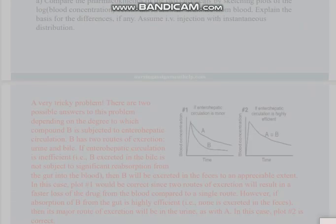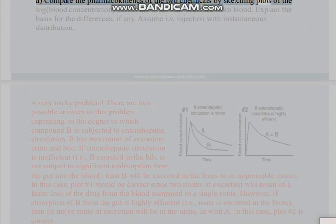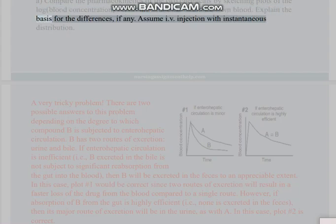Part A: Compare the pharmacokinetics of the two chemicals by sketching plots of the log blood concentration versus time for their clearance from blood. Explain the basis for the differences, if any. Assume IV injection with instantaneous distribution.